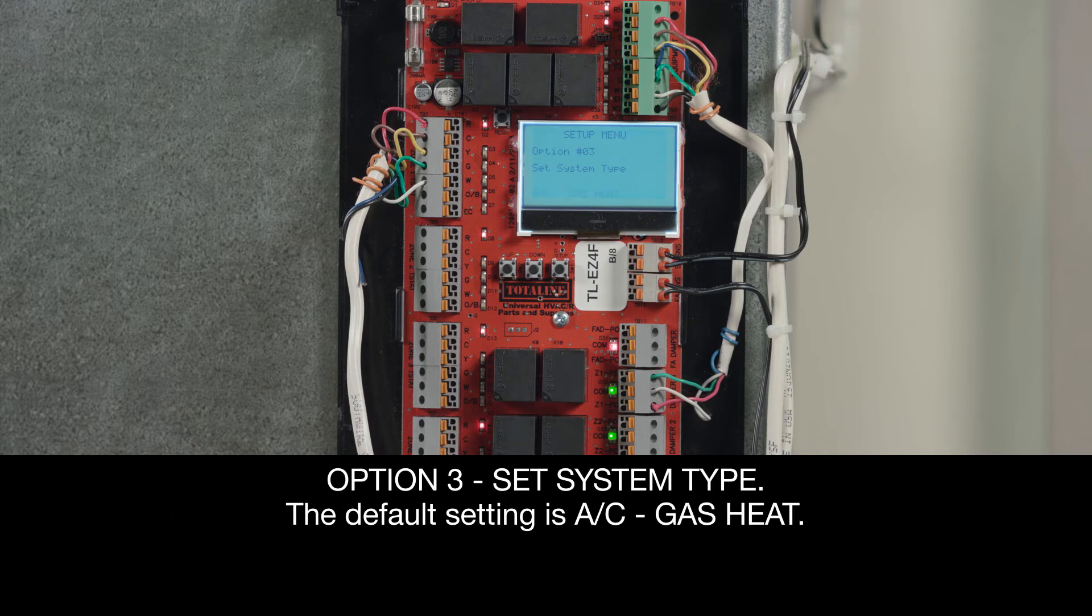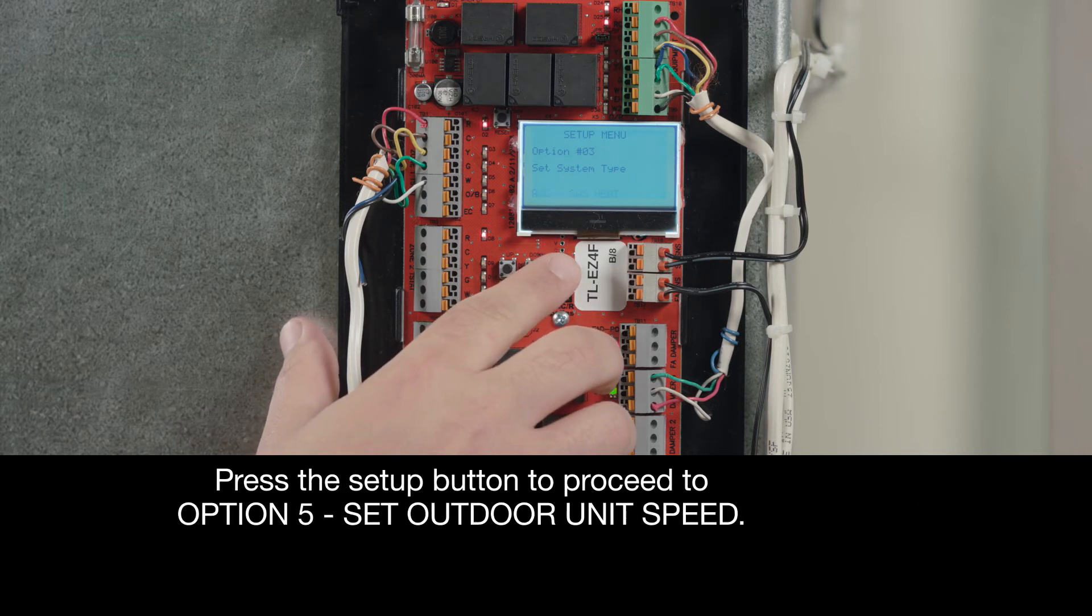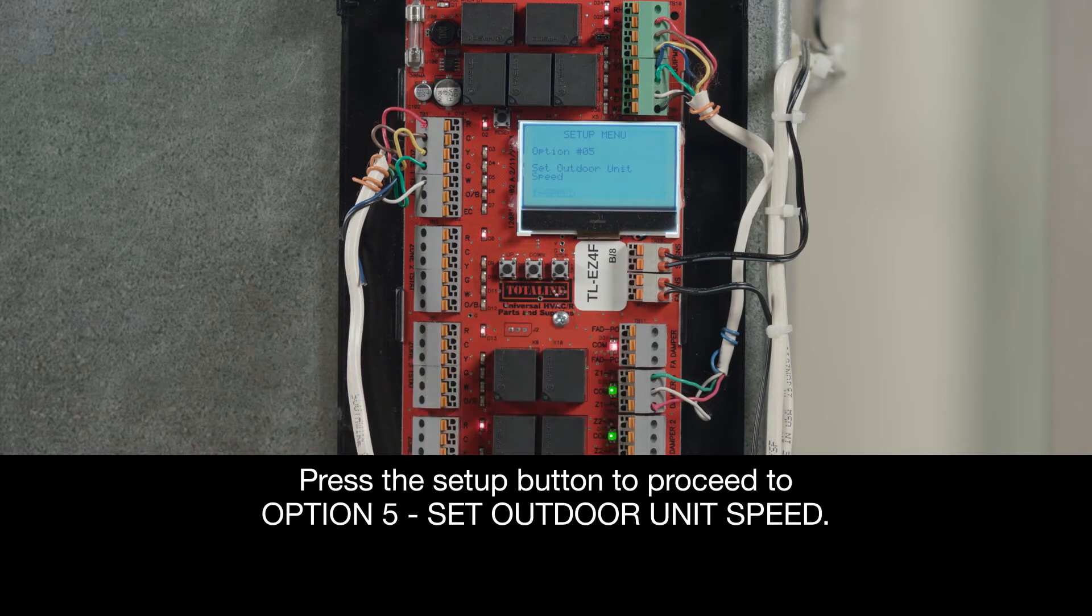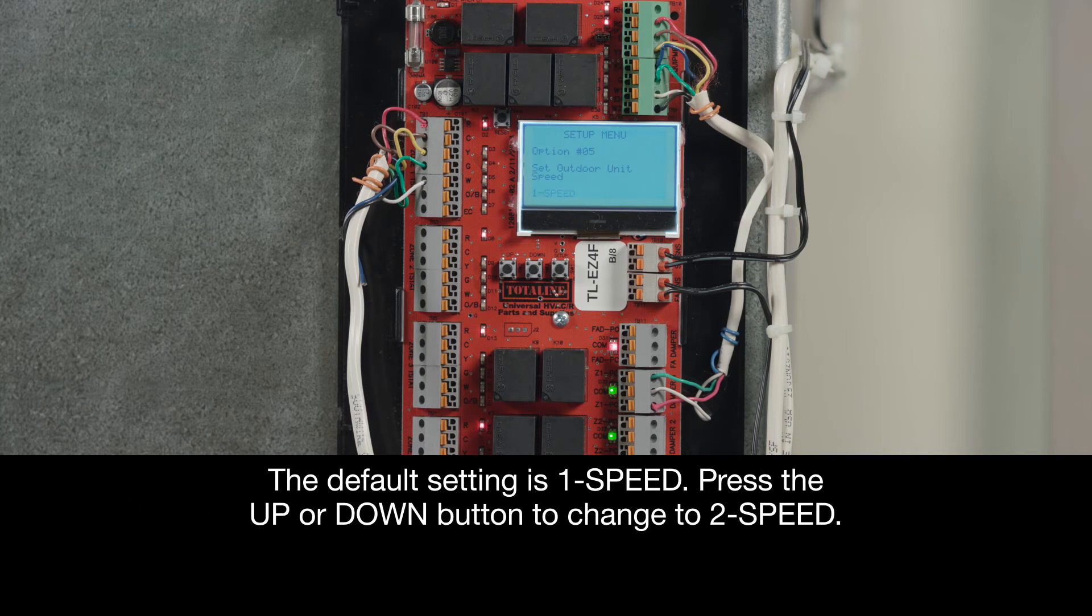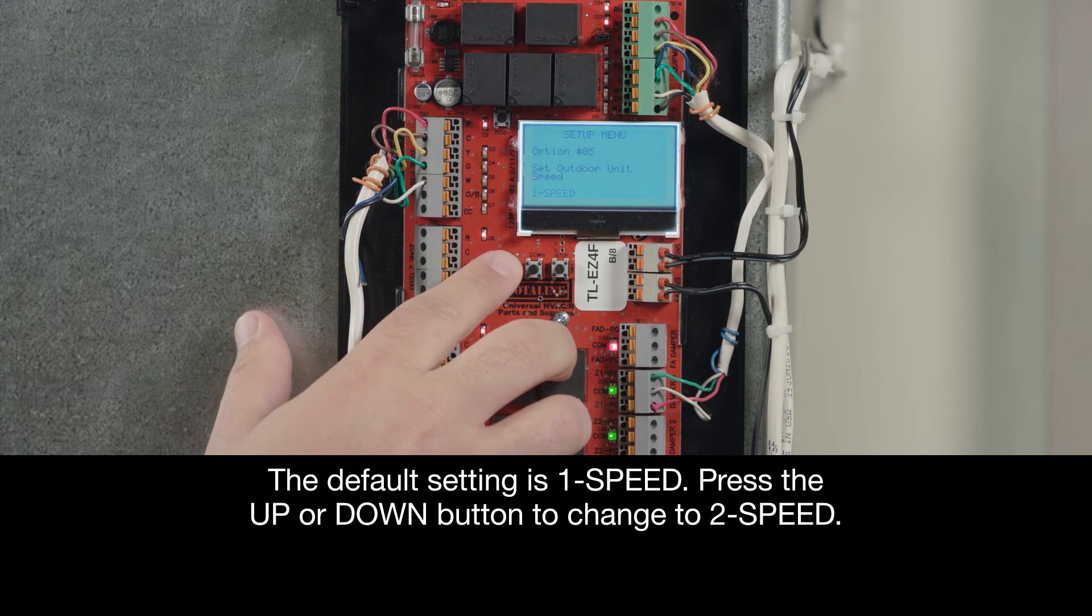Now we're on Option 3, Set System Type. The default setting is AC, Gas Heat. Next, press the Setup button to proceed to Option 5, Set Outdoor Unit Speed. The default setting is 1 speed. Press the Up or Down button to change to 2 speed.